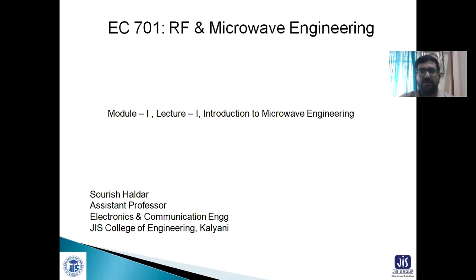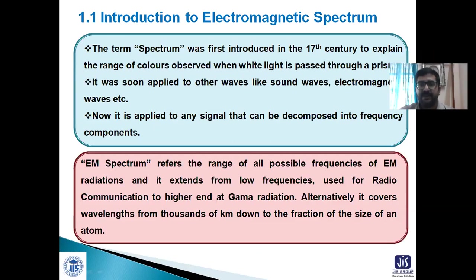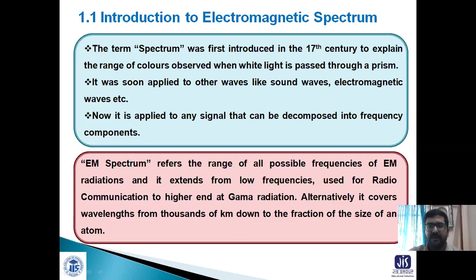Let us start with basic information on what is Microwave, what is RF, and what are the differences between general electronics or electrical engineering and RF and Microwave Engineering. The electromagnetic spectrum is a very large range of electromagnetic frequencies. We have learned electromagnetics in our previous semester and understood that electromagnetic waves propagate through different media in different ways, and we need an antenna to radiate electromagnetic waves.